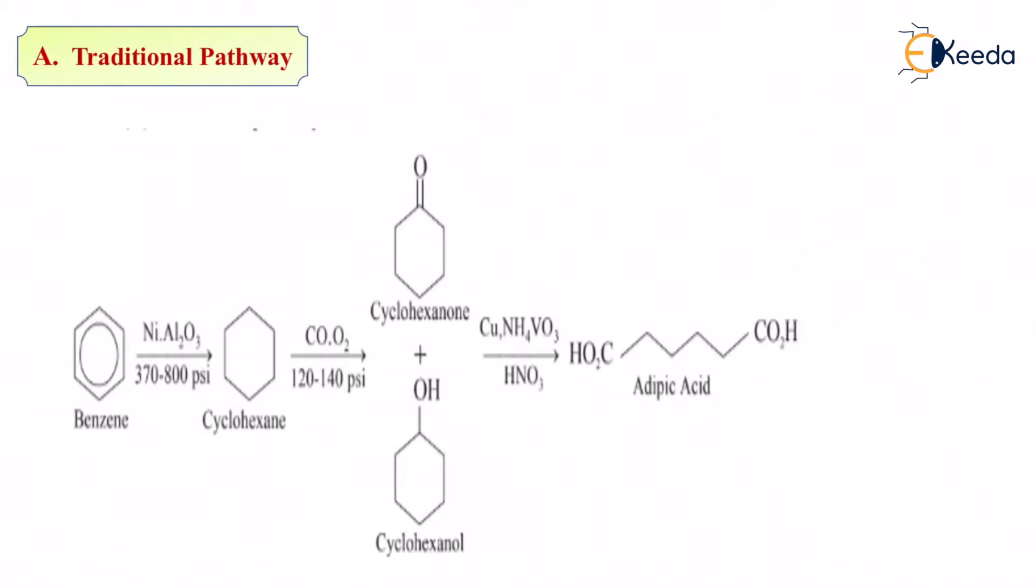One is ketone. C double bond O is a ketonic group. And COH is an alcoholic group. So this is cyclohexanol. It's an alcohol. If I take normal benzene and in presence of carbon monoxide and oxygen, I give more pressure, oxidation takes place. Oxidation is addition of oxygen. If oxygen is being added, I get two compounds as product. One is ketone and one is alcohol. Ketone is cyclohexanone. Alcohol is cyclohexanol.